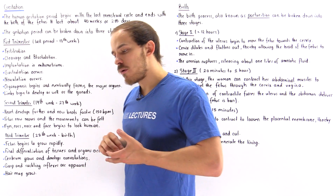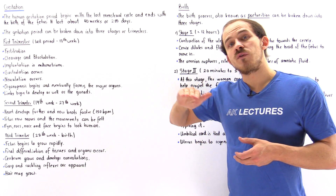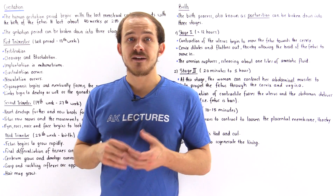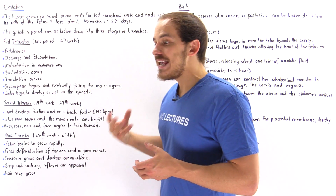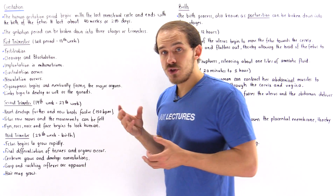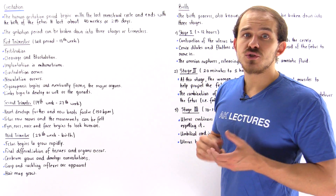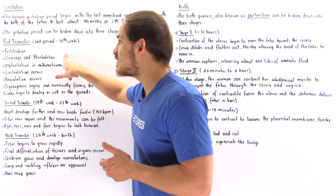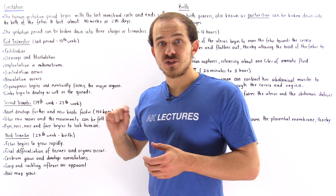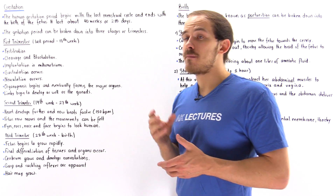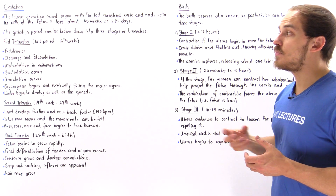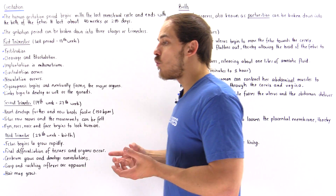As soon as the zygote forms, it begins to move along the cilia of the fallopian tube toward the uterine cavity, and as it moves it begins a process known as cleavage. Once it reaches the uterine cavity, it undergoes blastulation to form a blastocyst. About seven days after fertilization, that blastocyst implants itself onto the endometrium — the lining of the uterus. Once implantation takes place, we begin to form the placenta.